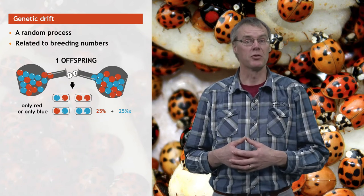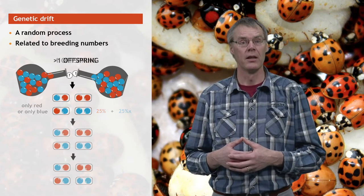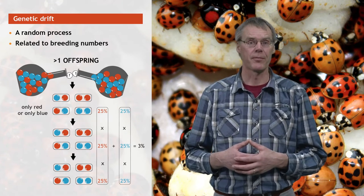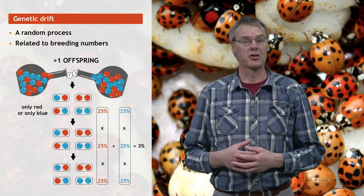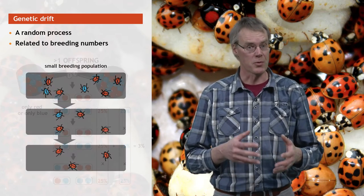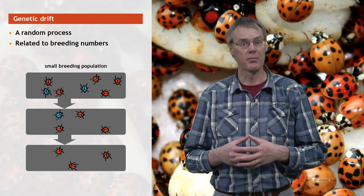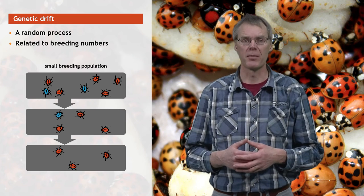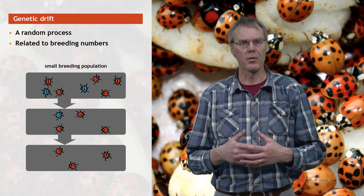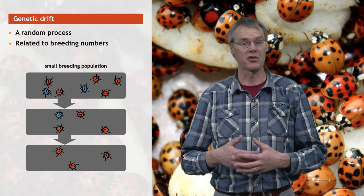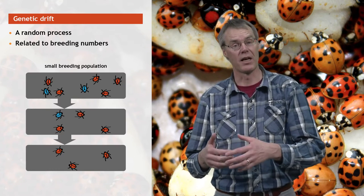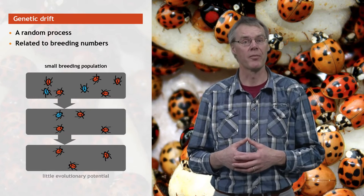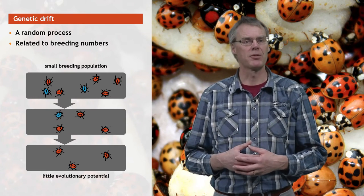If you allow these parents to produce more than one offspring, there's more chance that both colors will be present in the next generation. The smaller the breeding population, the higher the chances are that the population will lose genetic variation — and this is one of the major concerns in conservation biology. Small populations harbor little genetic variation that natural selection can act upon when the environment changes, so such populations are said to have little evolutionary potential and cannot easily adapt to a changing environment.